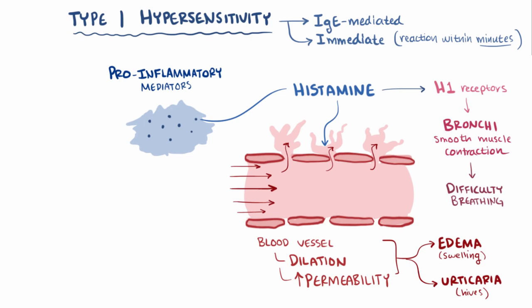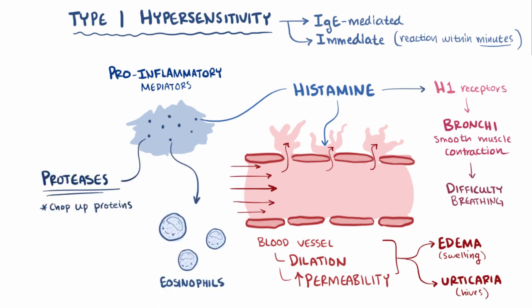In addition to histamine, mast cells release other pro-inflammatory mediators, including some that activate eosinophils and proteases, which chop up large proteins into small peptides.